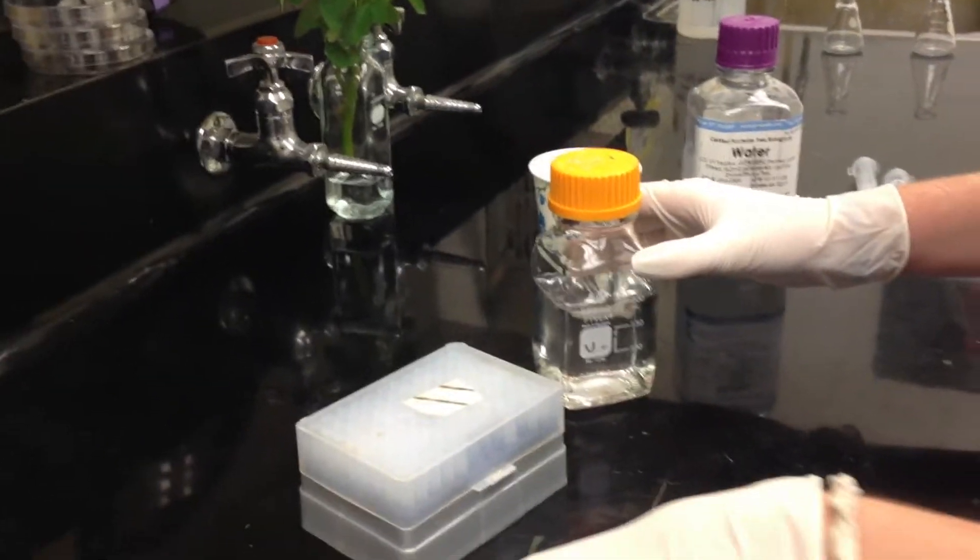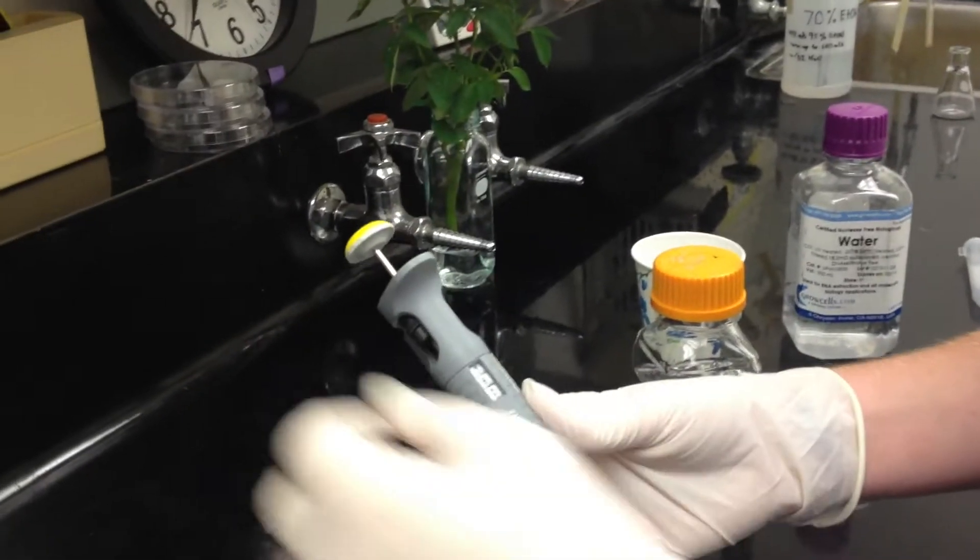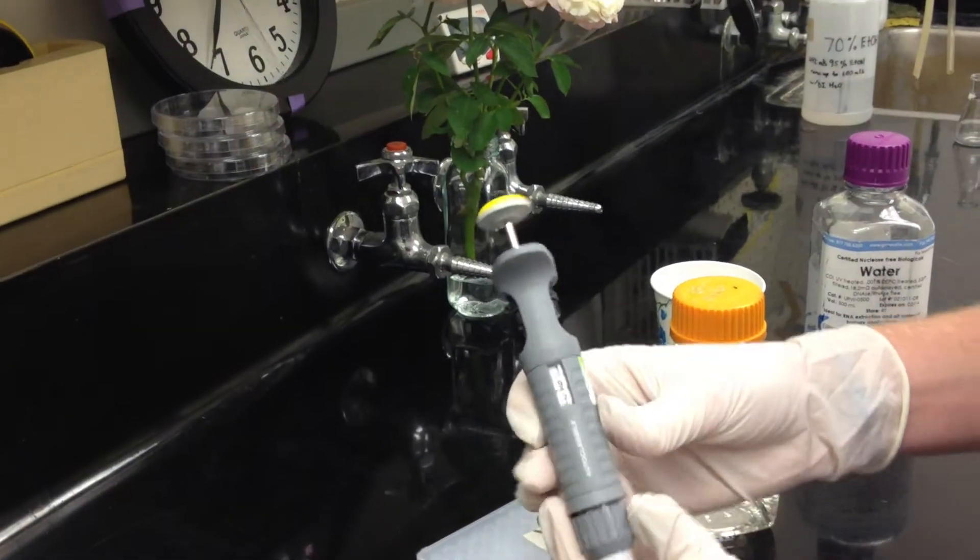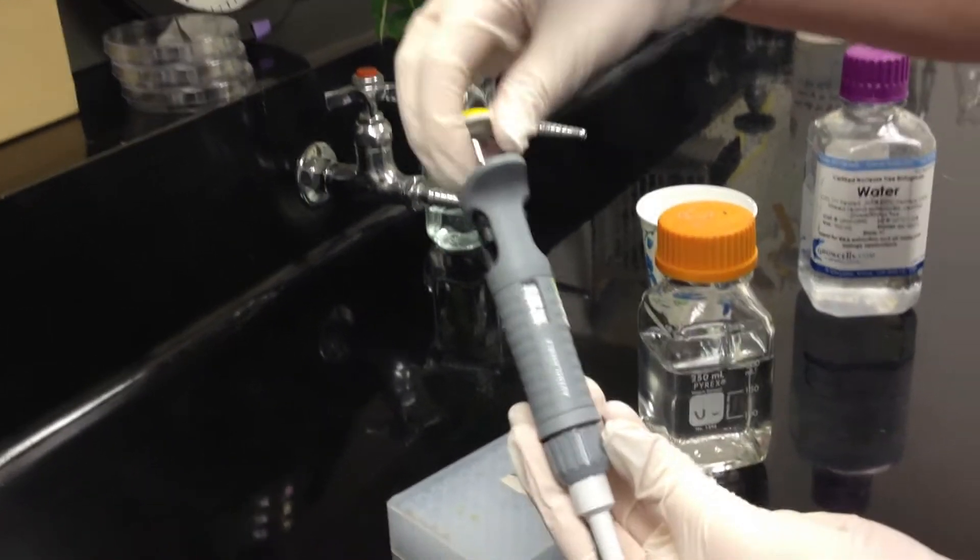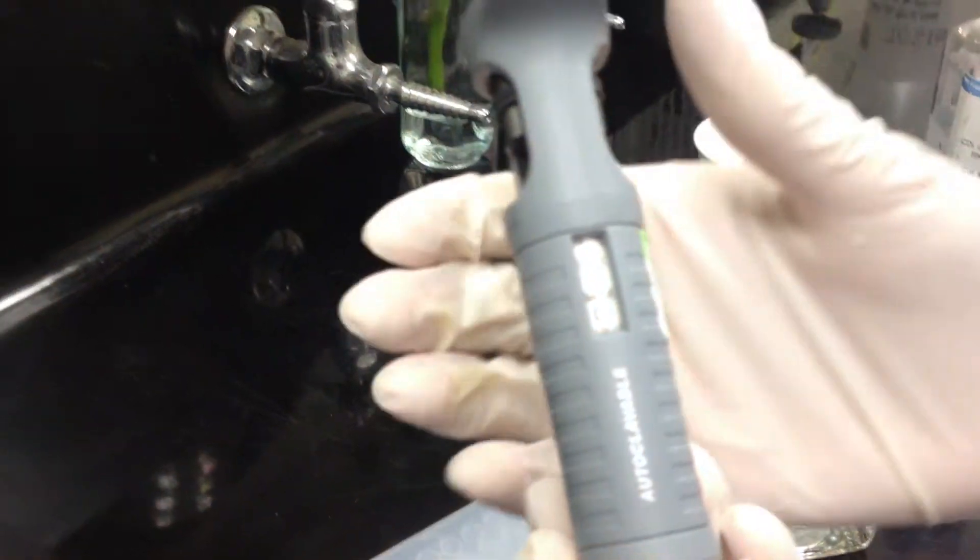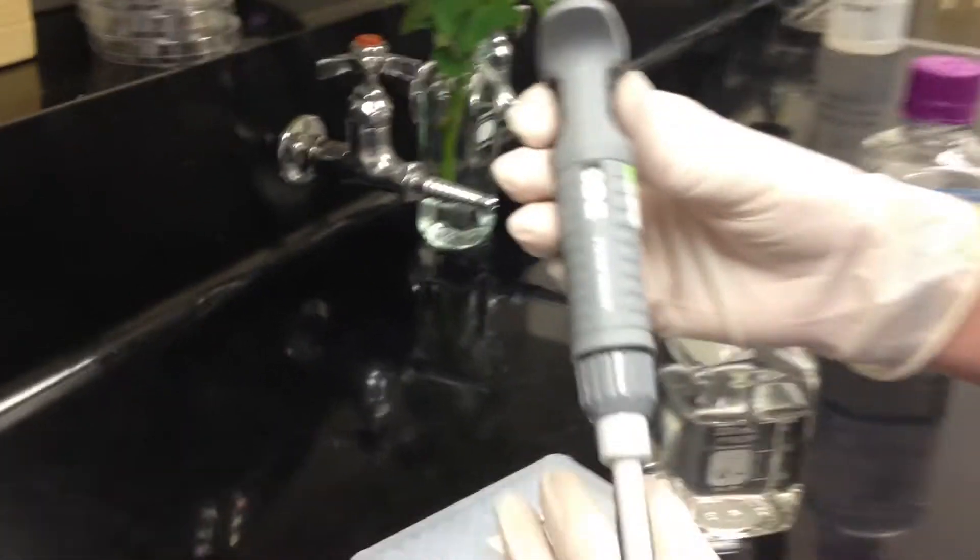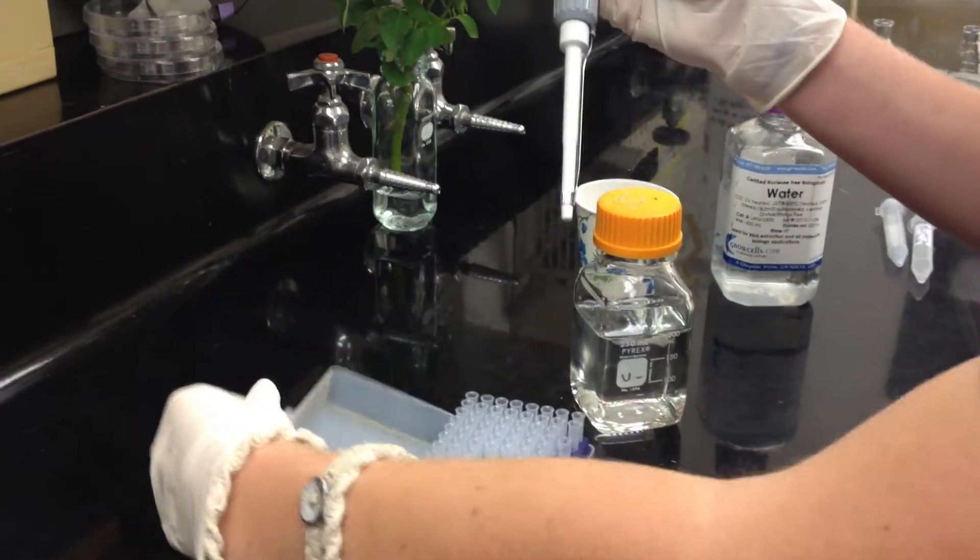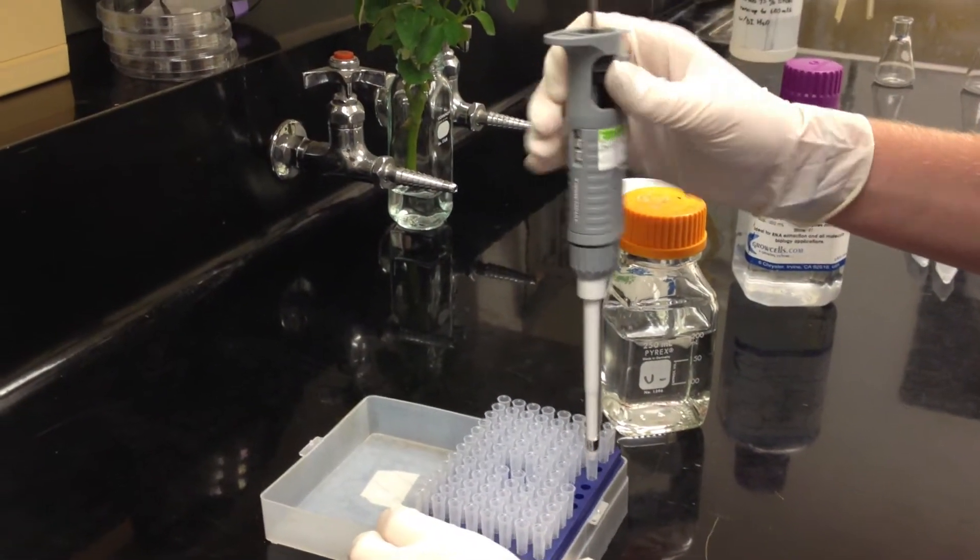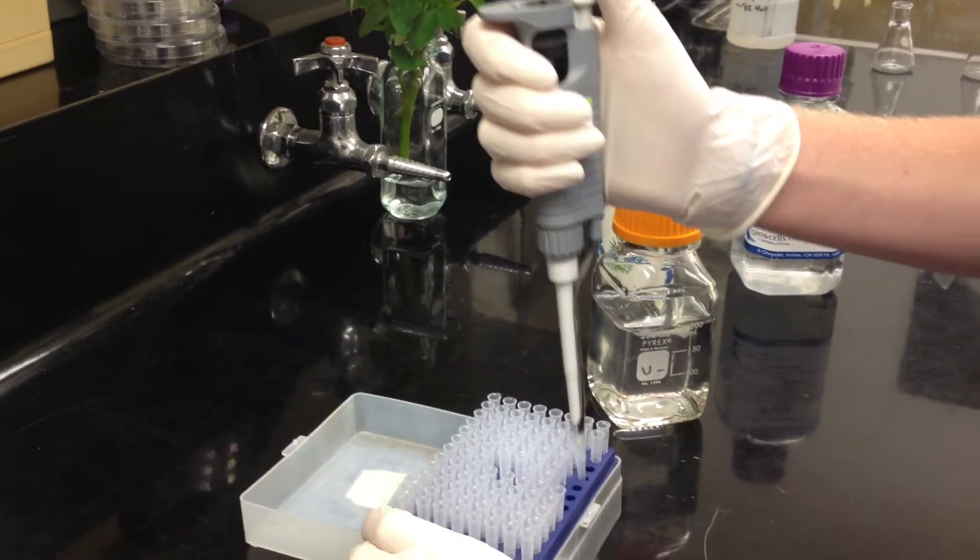The next step is to set your pipette to 200 microliters. Now you're going to attach the tip, so you just press firmly in here. Make sure it's on all the way.